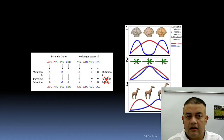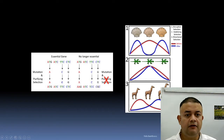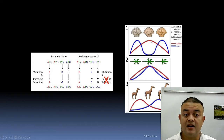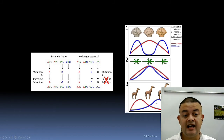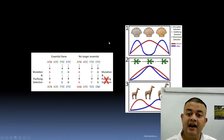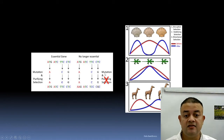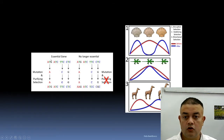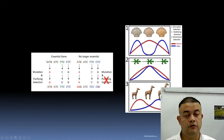We have already covered the different types of natural selection: directional selection, disruptive selection, and stabilizing selection. We can also add another type — purifying selection.